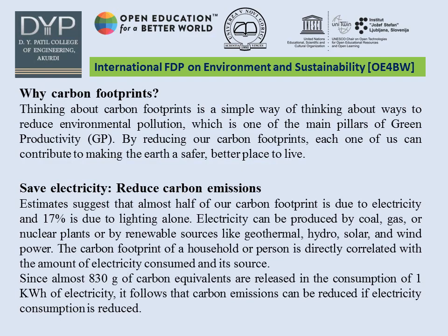Estimates suggest that almost half of our carbon footprint is due to electricity, and 17% is due to lighting load. Electricity can be produced by coal, gas, or nuclear plants, or by renewable sources like geothermal, hydro, solar, and wind power. The carbon footprint of a household or person is directly correlated with the amount of electricity consumed and its source. Since almost 830 grams of carbon equivalents are released in consumption of 1 kW of electricity, carbon emissions can be reduced if electricity consumption is reduced.